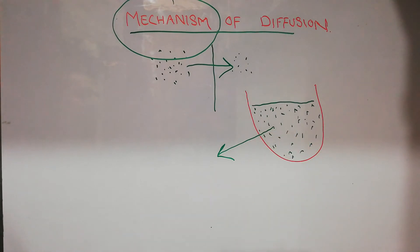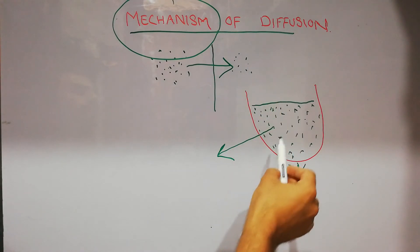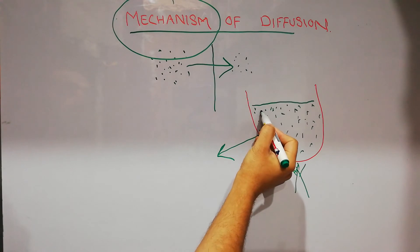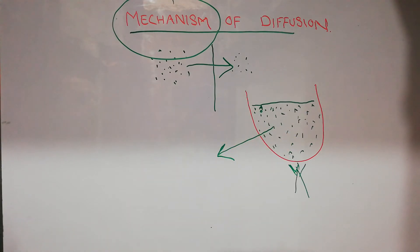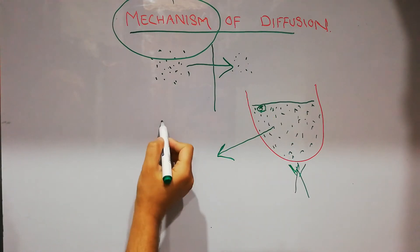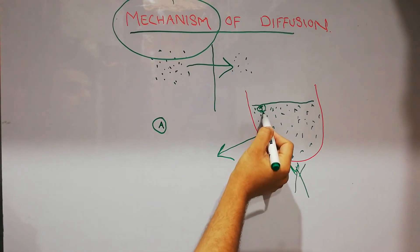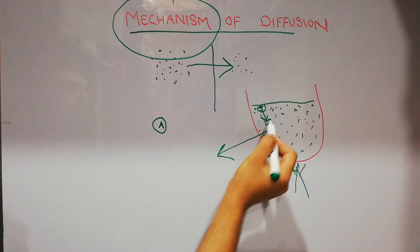The more the speed of movement of these molecules, the more will be the heat of the fluid in the container. Or if we heat this container, the motion of these molecules will increase. What happens when these molecules move randomly? For example, this is one molecule — we label it as A.